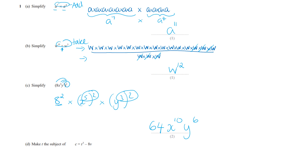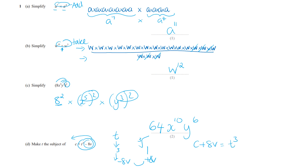In part d we're trying to make t the subject. Looking at the side where t is: it's t cubed minus 8v. What's happening to t is we are cubing it and then taking 8v, so we need to do the opposites — add 8v and then take the cube root. So c plus 8v gives t cubed, and then taking the cube root of both sides gives t equals the cube root of c plus 8v.